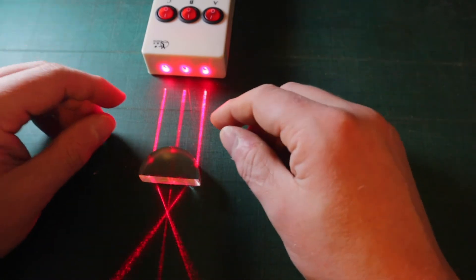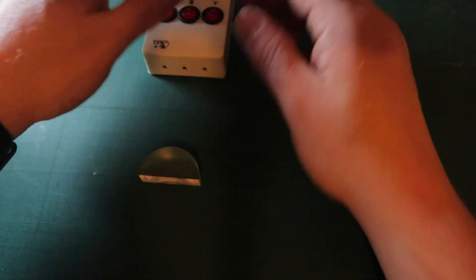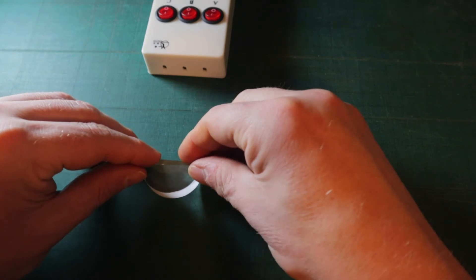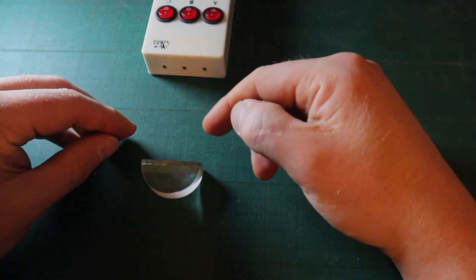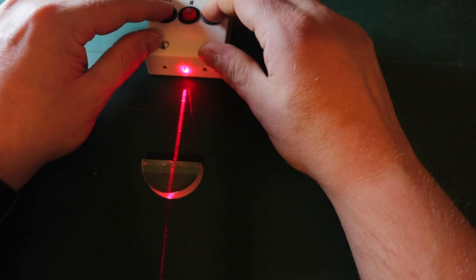So what happens if we flip this lens around? Okay, so we now have it with the flat side up and the curved side downwards, and we'll put the beam on.